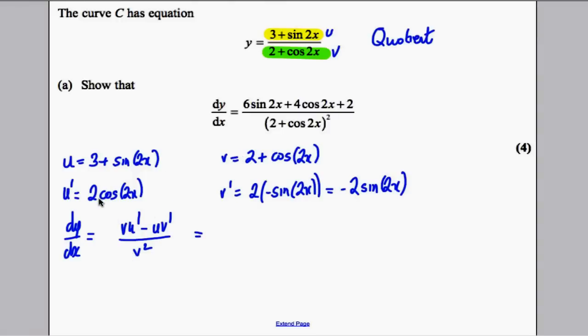So v u dash, this multiplied by this, would be 2 plus cos of 2x, all of that multiplied by 2 cos 2x. And then subtract, and then u v dash, which would be this multiplied by this.